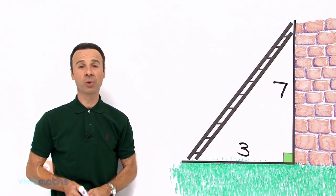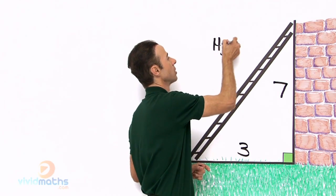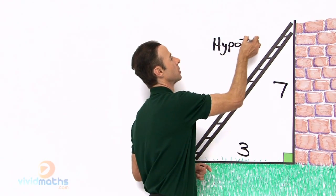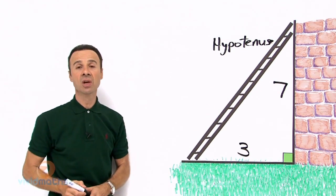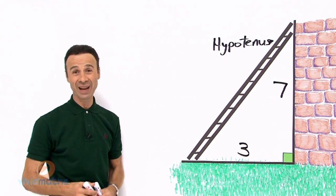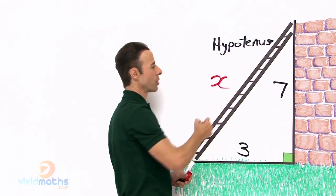Now that is also called the hypotenuse, so let me just label that and call it hypotenuse. That is the hypotenuse. We do not know what it is, so we may as well just call it x. Let us call it x.